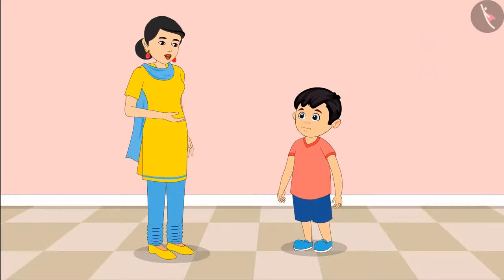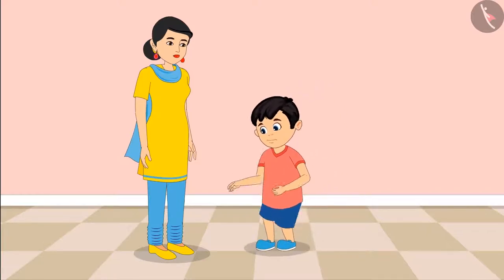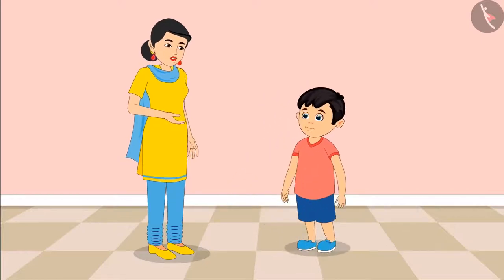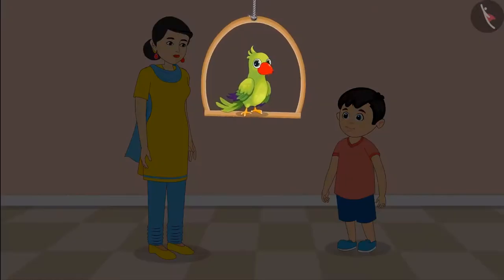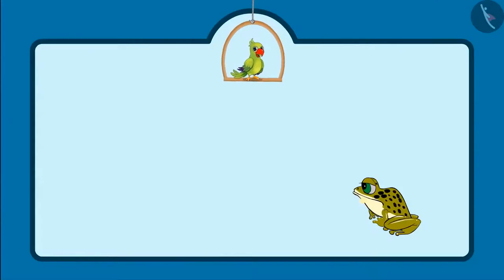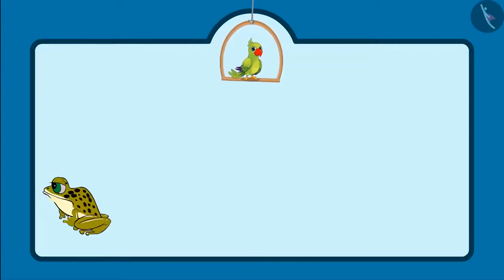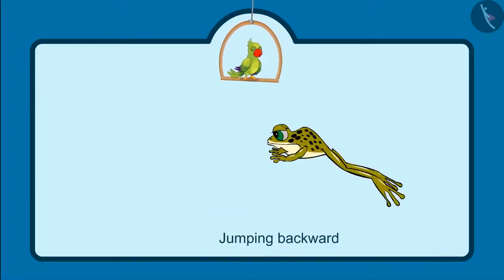Okay Jhotu, now can you jump a step forward from the place you are standing right now? Yes mom! And now jump a step backwards. Well done Jhotu! Kids, did you see how Jhotu jumped a step forward and then backwards? Can you tell whether this frog is jumping forward or backwards? This frog is jumping forward, and this is called jumping backwards.